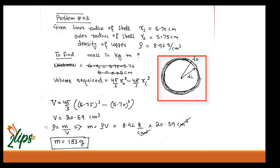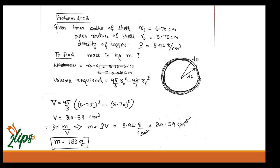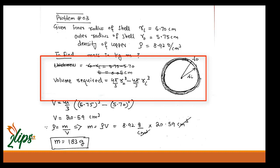We define rᵢ as the distance from center to the inner surface and r₀ as the distance from center to the outer surface. Here rᵢ = 5.70 cm, r₀ = 5.75 cm, and the density of copper is 8.92 g/cm³. We need to find the volume of the shaded shell region only.